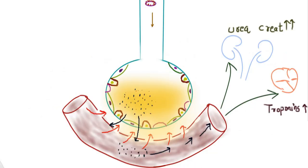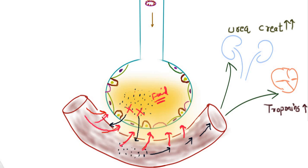As these cytokines are liberated within the alveolar system, they cause inflammatory changes in the adjacent blood vessels, increasing vascular permeability and leading to exudation of fluid into the alveolar space. As the alveoli fill with this fluid, gas exchange becomes severely impaired and the patient experiences difficulty breathing. This is the stage at which most patients require ventilatory support.